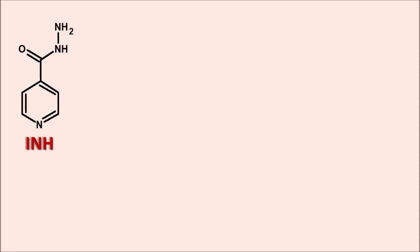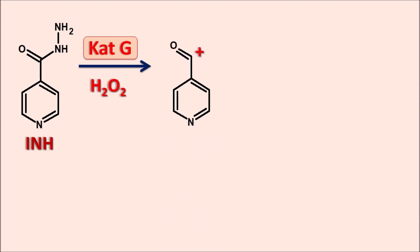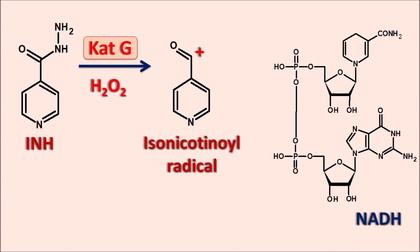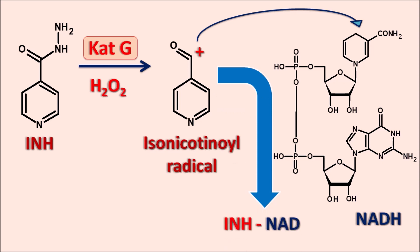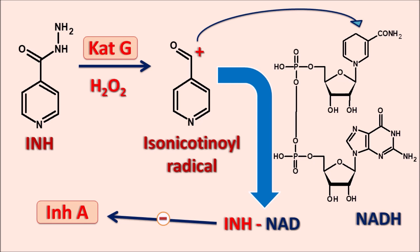Isoniazid interacts with the catalase-peroxidase enzyme in the presence of hydrogen peroxide, undergoes ionization, and forms a radical — the isonicotinyl radical. This radical interacts with NADH to form the addition product INH-NAD, which inhibits the activity of the enzyme coded by INHA. The two important genes responsible for isoniazid's action are KatG (coding for catalase-peroxidase) and INHA (coding for the enzyme responsible for mycolic acid synthesis). Mycobacterial cells can acquire resistance to isoniazid by mutation of either KatG or INHA.